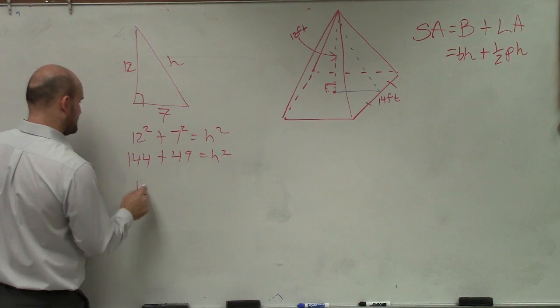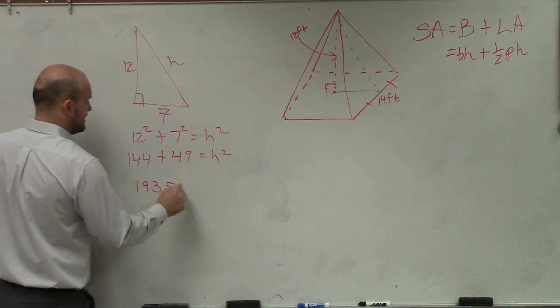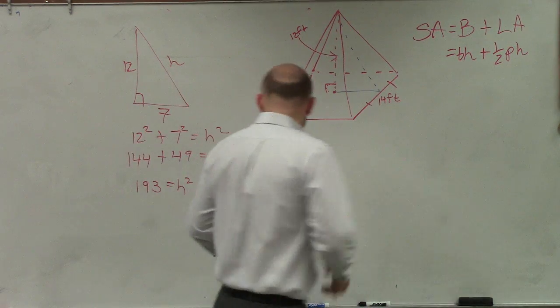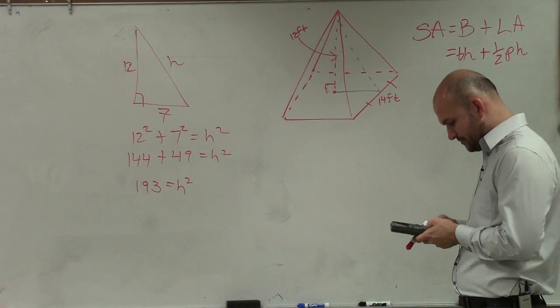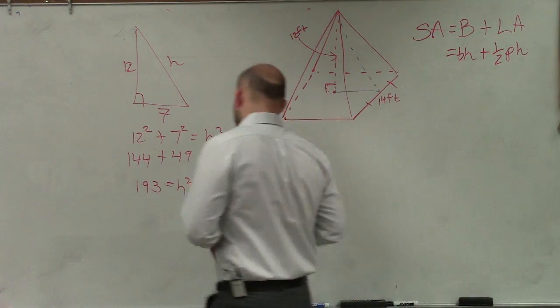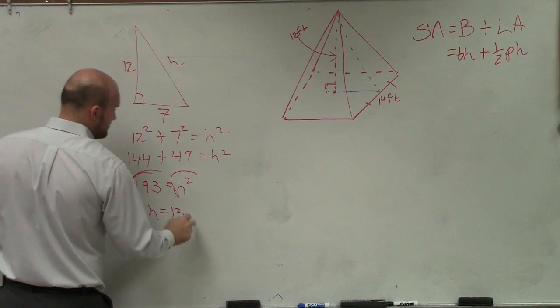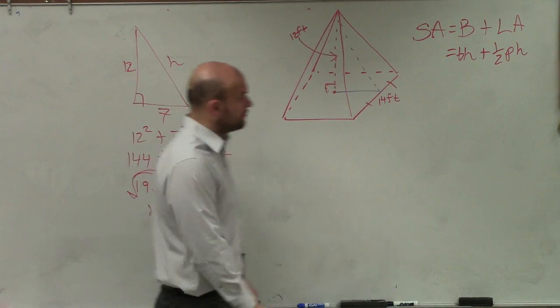So that's 193. So I have 193 equals h squared. So now, I need to take the square root of 193 and I get 13.89. So h equals 13.89. Let's round it to the tenth, which is 13.4.